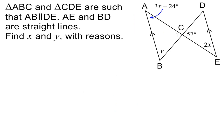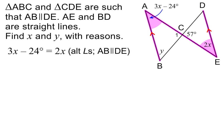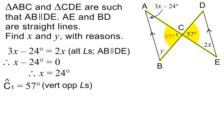Here is the next question. Please pause to read it. We begin by using the parallel lines and the letter Z or N. This means that 3x minus 24 degrees equals 2x, because they are alternate angles and AB is parallel to DE. To solve the equation, we begin by subtracting 2x from both sides. We then add 24 degrees to both sides. x is therefore equal to 24 degrees. Before we can find y, we first need to use these straight lines and the fact that vertically opposite angles are equal. Angle C1 is therefore equal to 57 degrees.